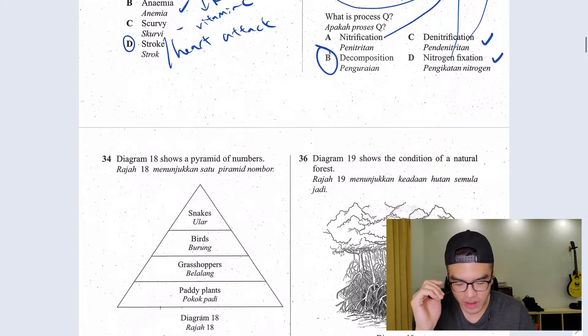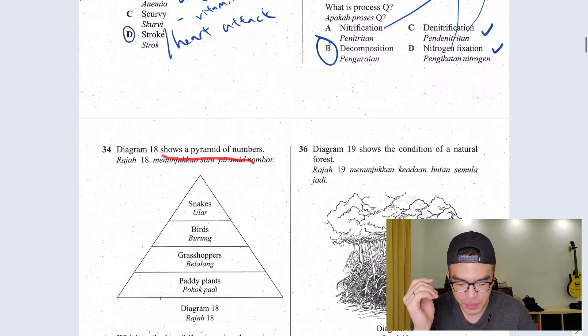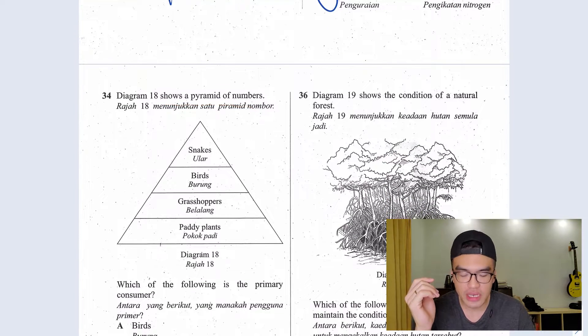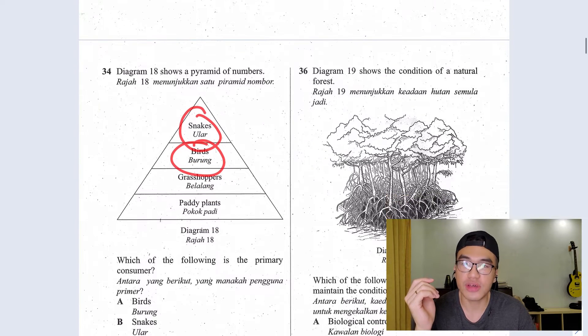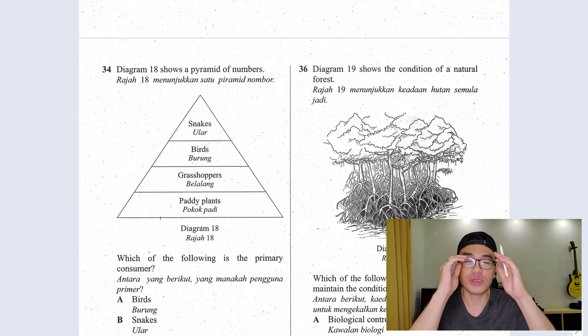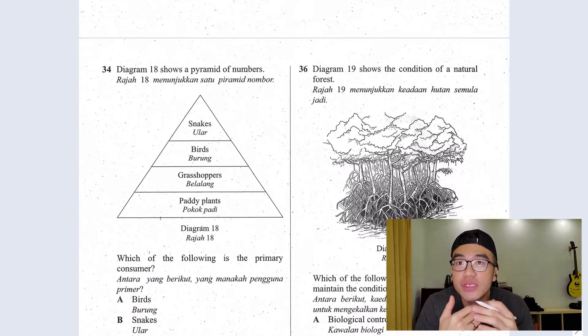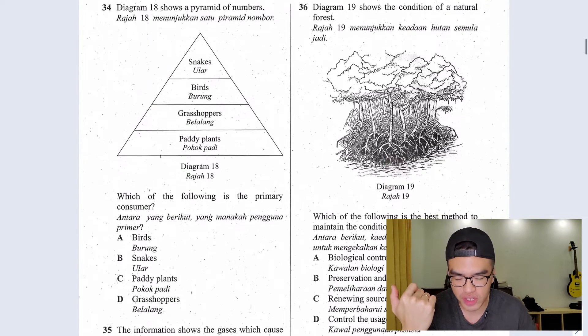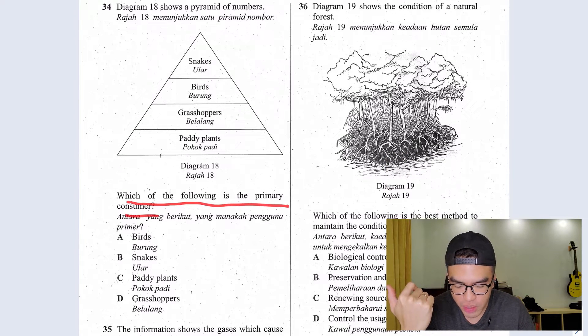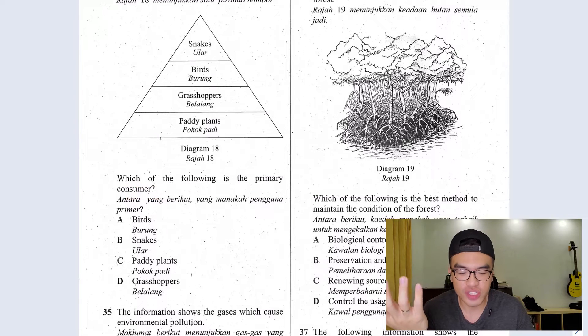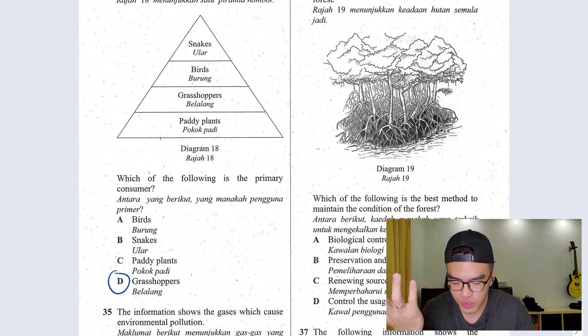Question 34 shows a pyramid of numbers. As you can see here, you have the producers here, your primary consumer here, secondary consumer and tertiary consumer. The numbers will decrease as they go up. As they get stronger, they will reduce the number. This is the balance of nature. Which of the following is the primary consumer? The primary consumer would be your grasshopper.